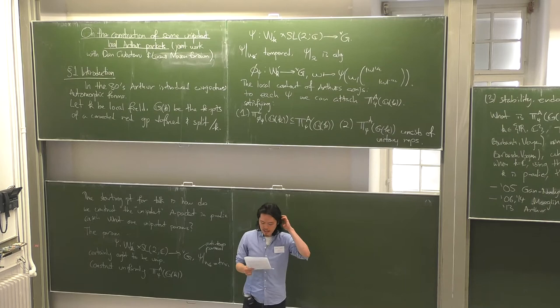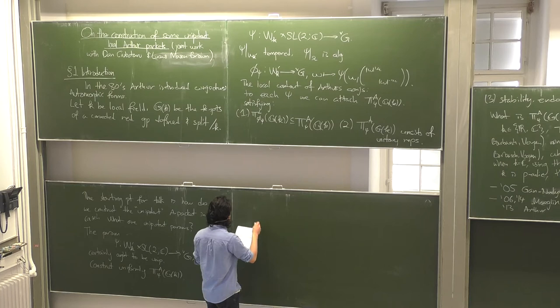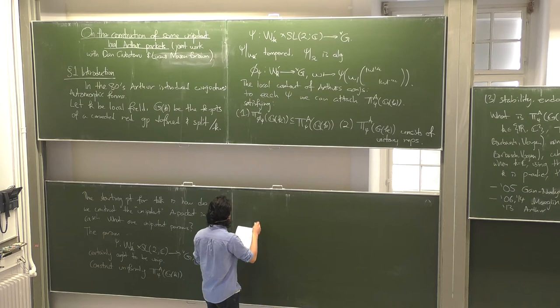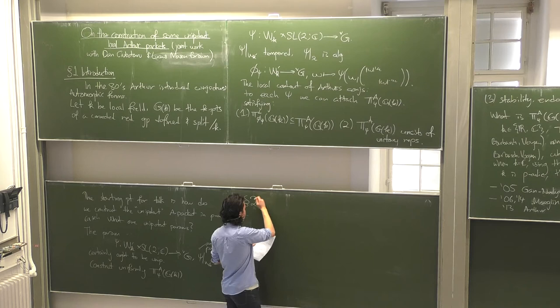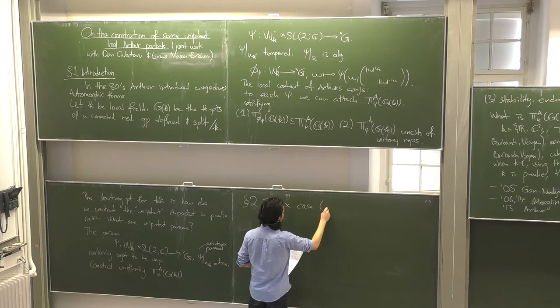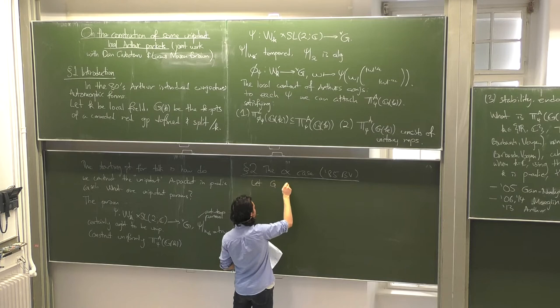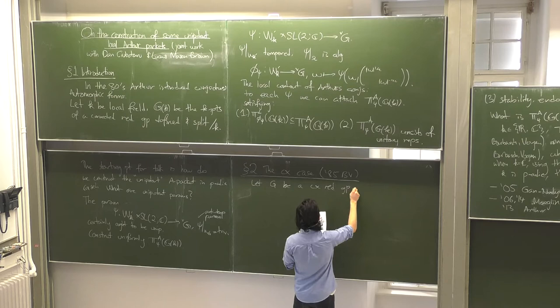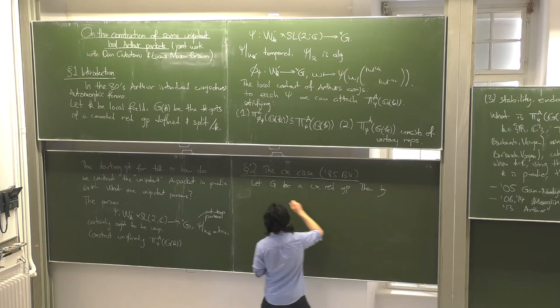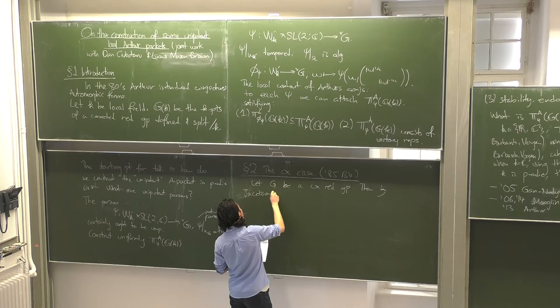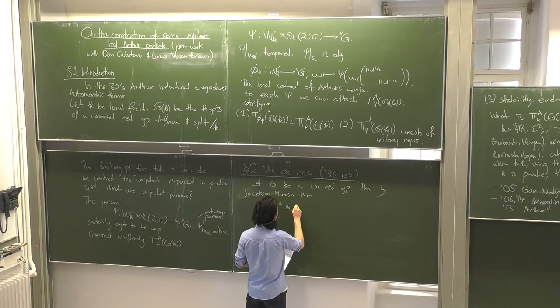Before going into the details of the p-adic construction, I want to motivate it by what was done in the complex case by Barbasch and Vogan in the 1985 paper. Let me briefly go over the proof strategy — the construction in the complex case. Let G be a complex reductive group. Then, by the Jacobson-Morozov theorem, there is a bijection between anti-tempered parameters — trivial on the Weil group — from SL2 into G-check mod G-check, and nilpotent orbits on the dual side.